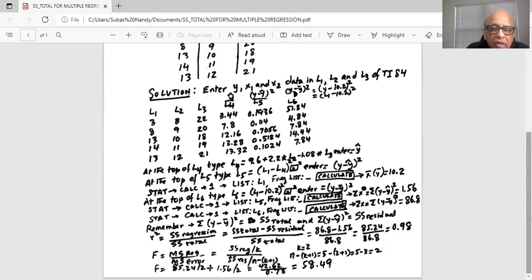And how do I calculate F? Test statistic F is mean square regression by mean square error. What is mean square regression? Sum square regression divided by degrees of freedom of sum square regression, which is k. k is the number of independent variables. We have only two independent variables, x1 and x2. So sum square regression divided by 2. And what is mean square error? Sum square error, which is sum square residual divided by its degree of freedom, n minus k plus 1.